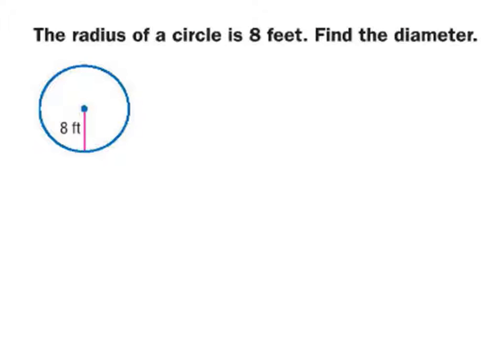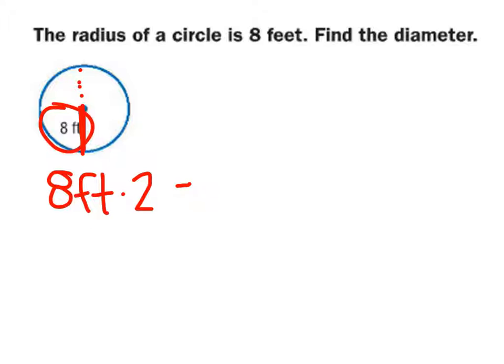What if we're going to find the diameter from the radius? The same principles still apply. We have eight feet as our radius, shown by the purple line, but the radius is only half the diameter, so we take our eight feet, multiply it by two, which gives us a diameter of 16 feet.